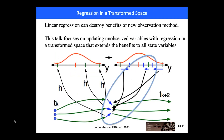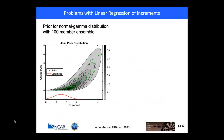Unfortunately, as soon as one goes ahead and regresses those increments with a linear regression across all the state variables, you can lose all those benefits. So this talk focuses on ways to update unobserved variables so that you can continue to get those benefits, and that works in a transformed space. Here's an example of why linear regression is problematic. I've generated a prior bivariate distribution that is normal in the horizontal dimension and gamma in the vertical dimension — think of temperature in the horizontal that is observed, with the likelihood shown in red.